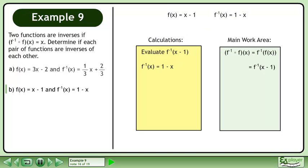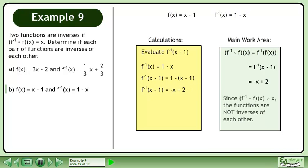We know that f inverse of x equals 1 minus x. So f inverse of x minus 1 equals 1 minus (x minus 1), which gives us f inverse of x minus 1 equals negative x plus 2. Since f inverse of f of x does not equal x, the functions are not inverses of each other.